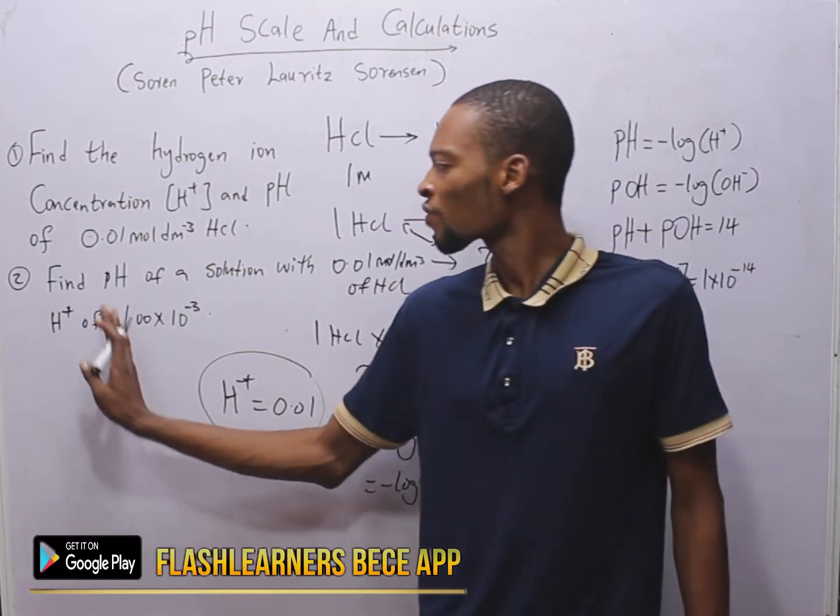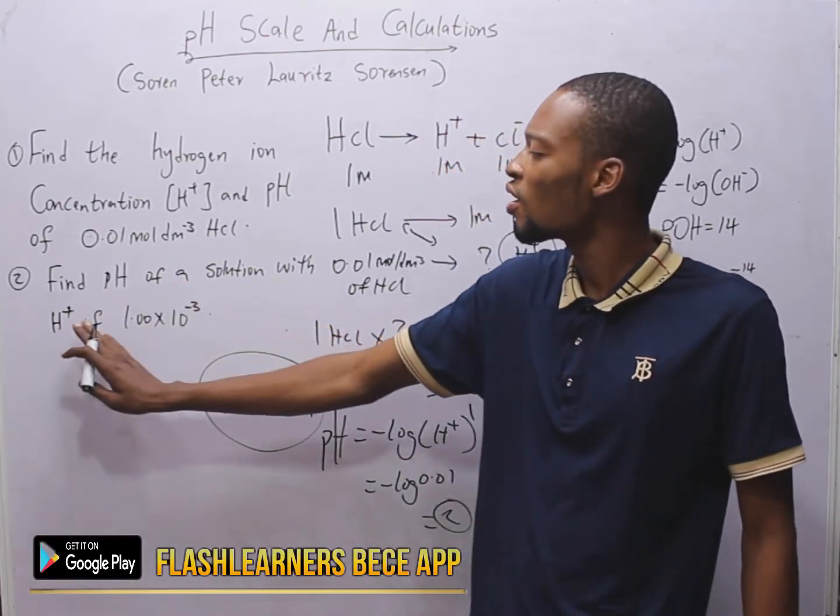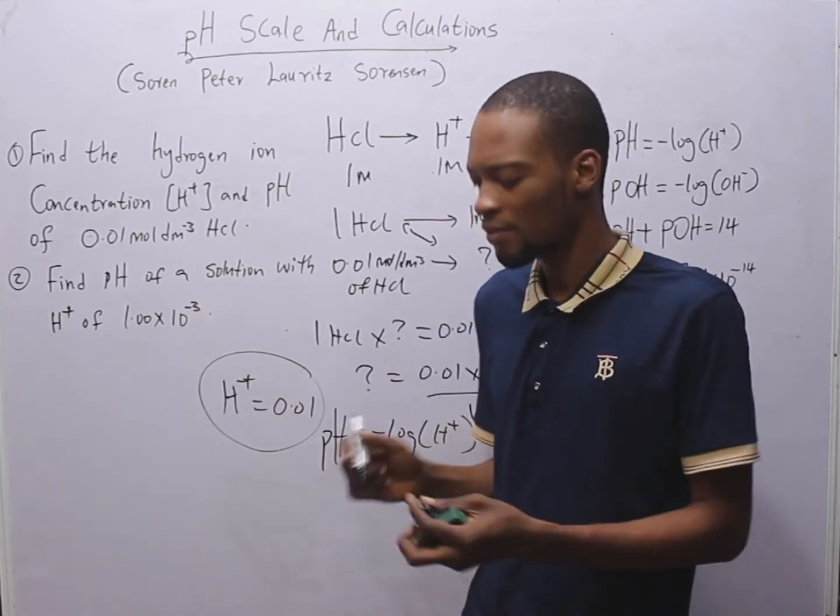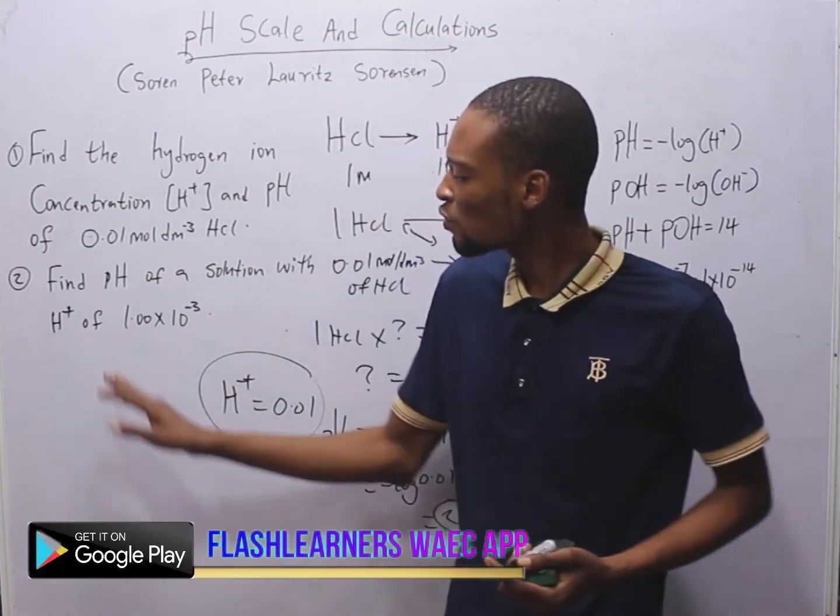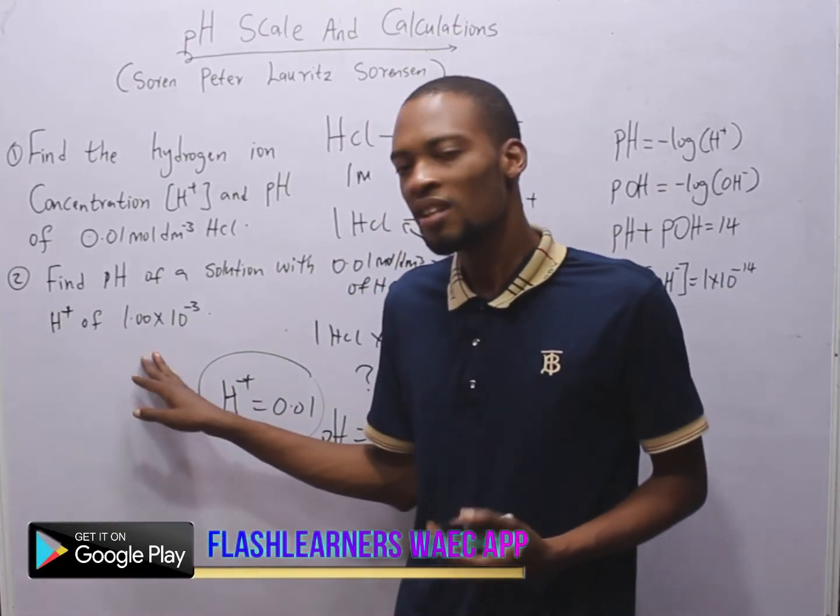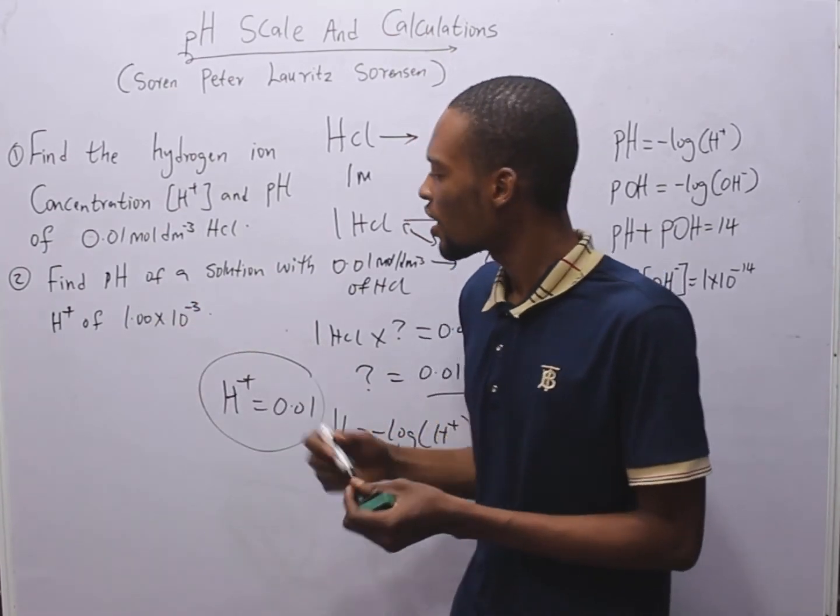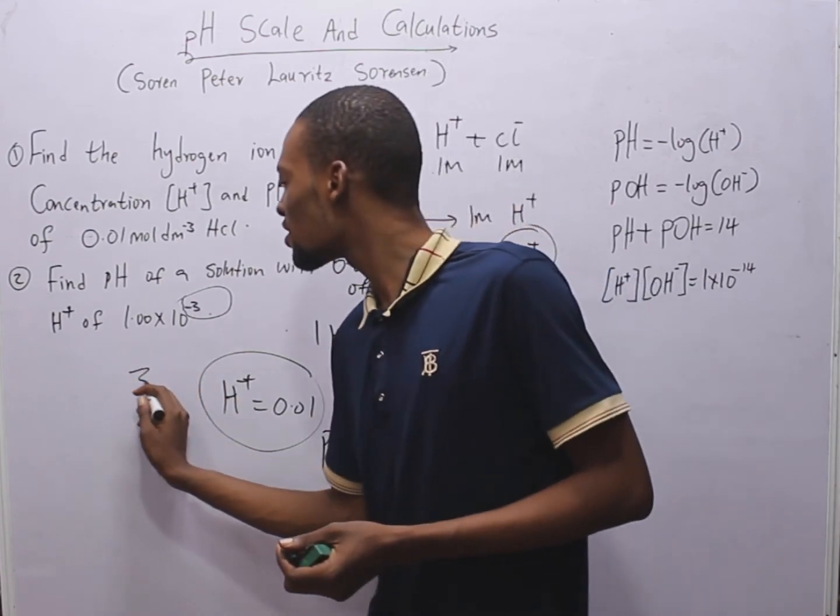And for the second question, find the pH of a solution with hydrogen ion concentration of 1.00 times 10 raised to the power of minus 3. Take a look at this shortcut. Anytime you are given 1 point something times 10 raised to the power of minus anything, any value that is here is the pH. So, the pH here is 3.